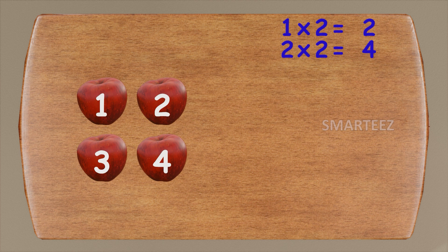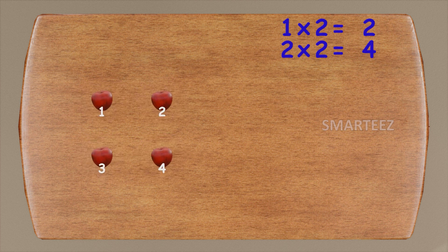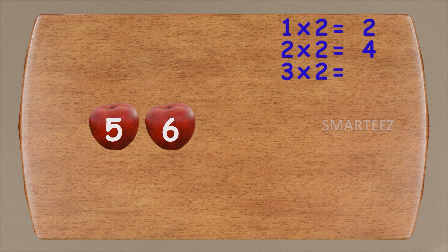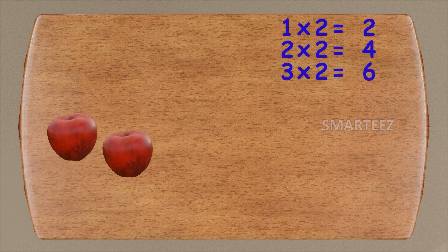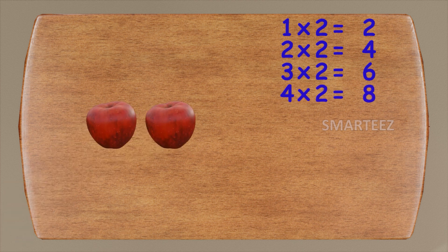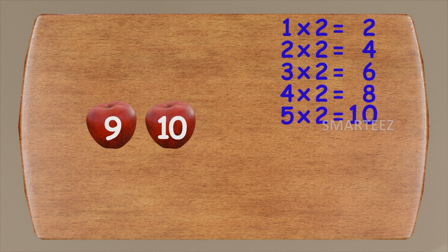Let's keep going. We'll add more apples, two at a time. That's two more apples. We had four already — this will be five and six. Three times two is six. Let's add two more. We had six earlier — this will be seven and eight. Four times two is eight. Let's add two more. We had eight earlier — this will be nine and ten. Five times two is ten.